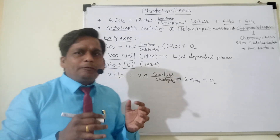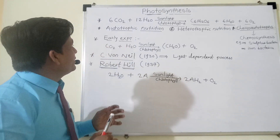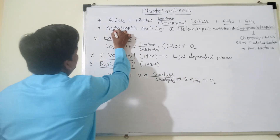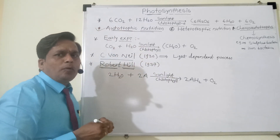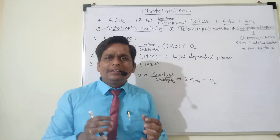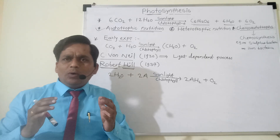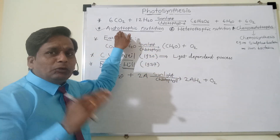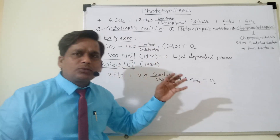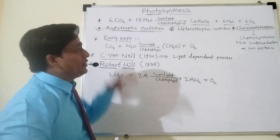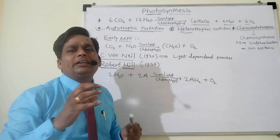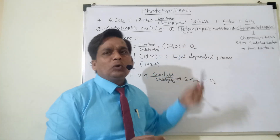In photosynthesis, we will see a very important concept — autotrophic nutrition and heterotrophic nutrition. Autotrophic nutrition means the living organism can prepare its own food itself, which means it does not depend on others. Heterotrophic means hetero means different — these organisms depend on others and do not prepare their own food.